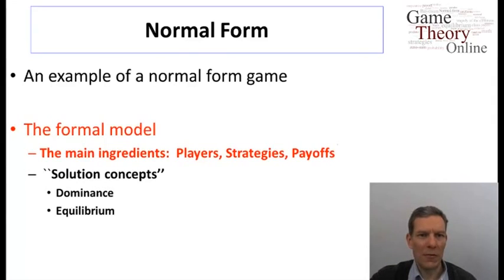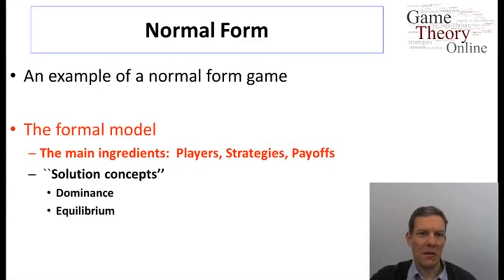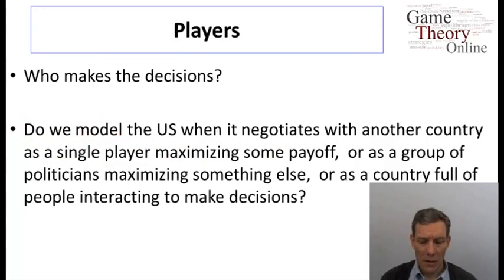So in terms of representing a game, there's basically three main ingredients here: we have players, strategies, and payoffs. And let's take those each in turn, and in particular we'll start with players. So in terms of the players, we'll include in a game the people who are actively making the decisions in the game.